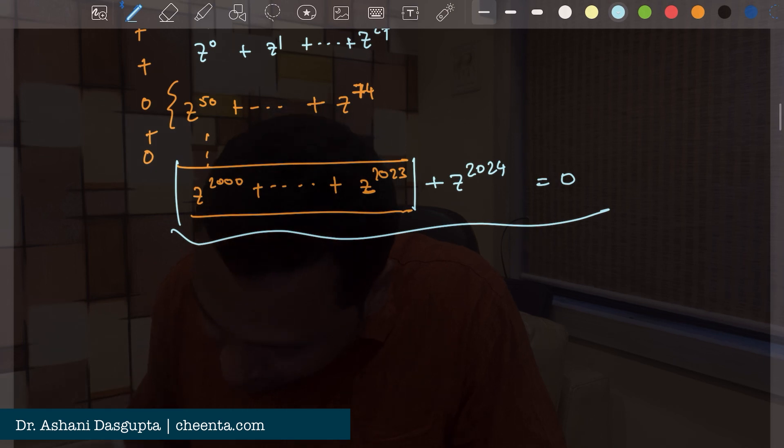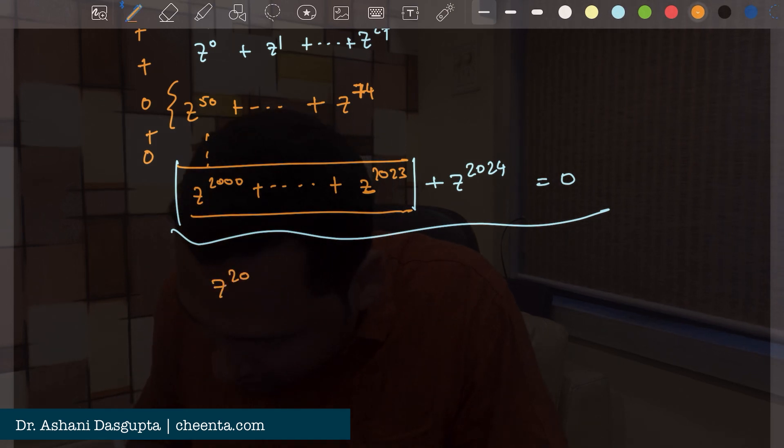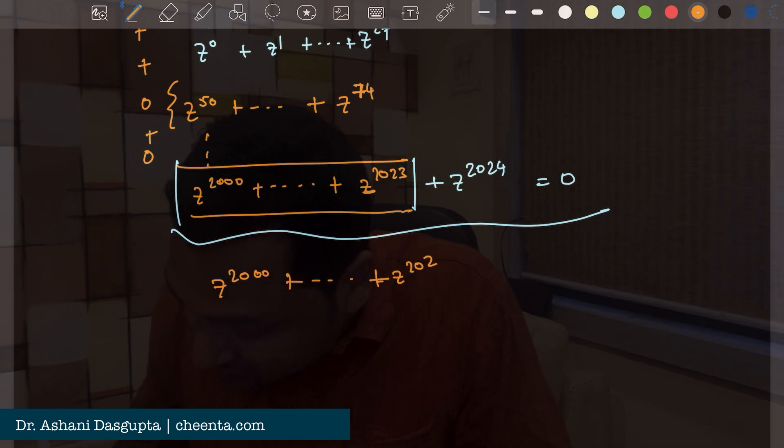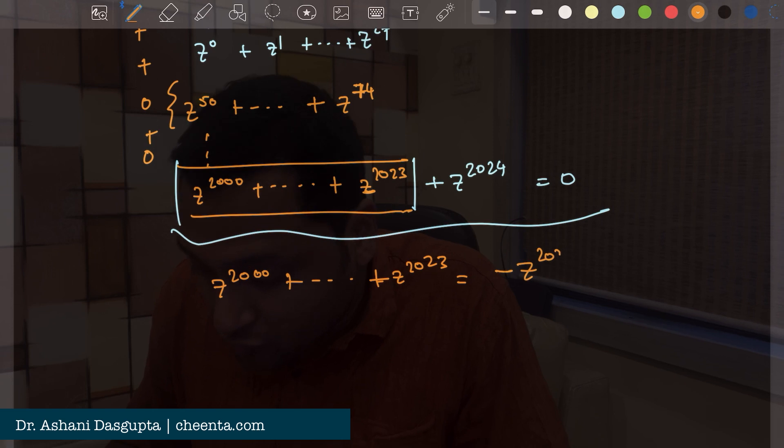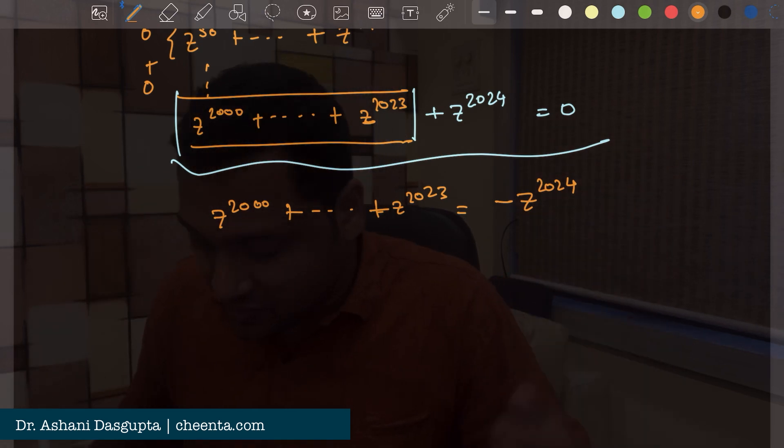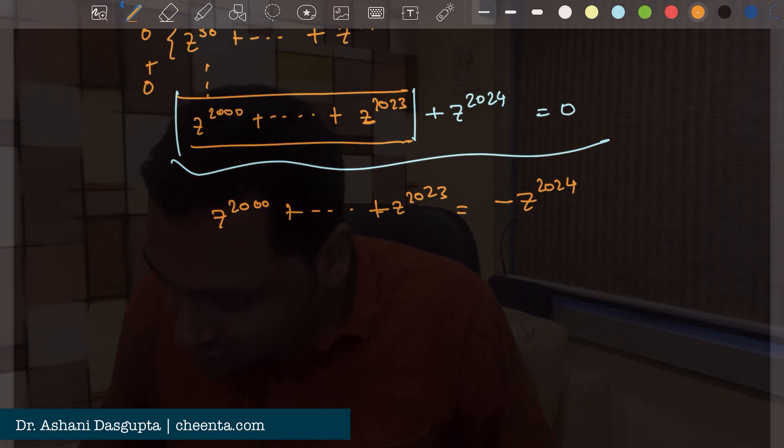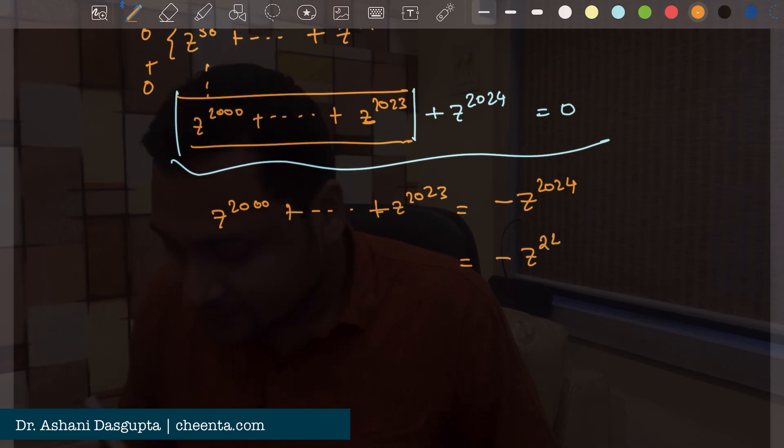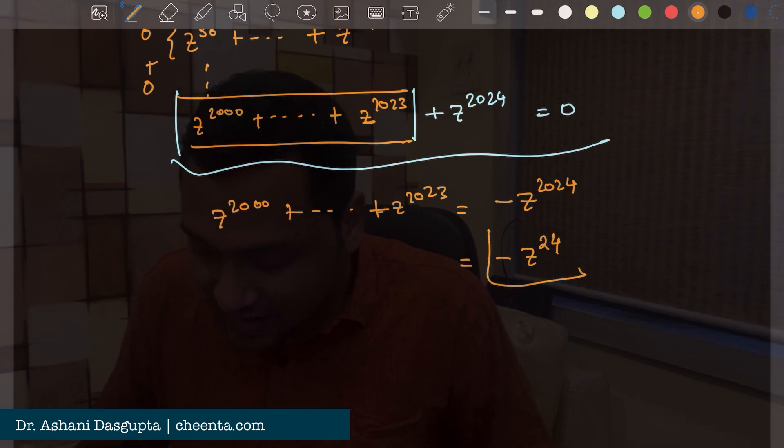So this much must be equal to z to the power 2000 up to z to the power 2023 must be equal to minus z to the power 2024. And you can extract all the z to the power 25 from here which are 1. So this is just negative z to the power 24. So that's the final value. That's the answer.